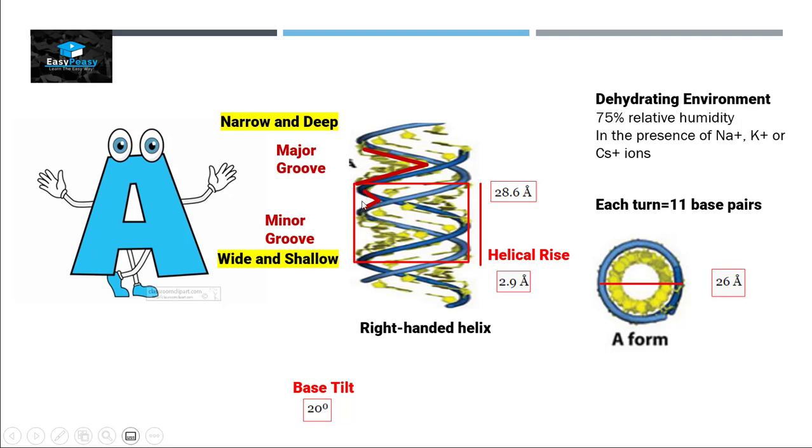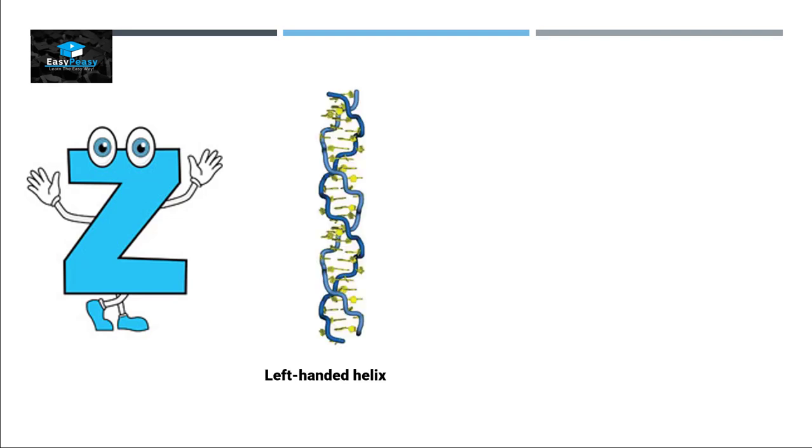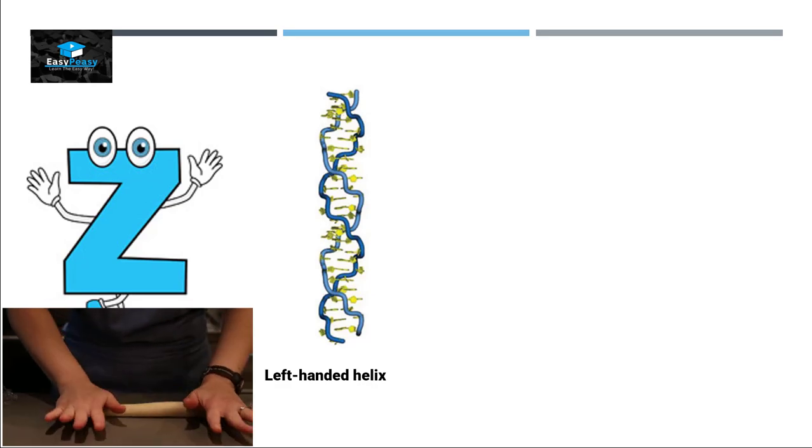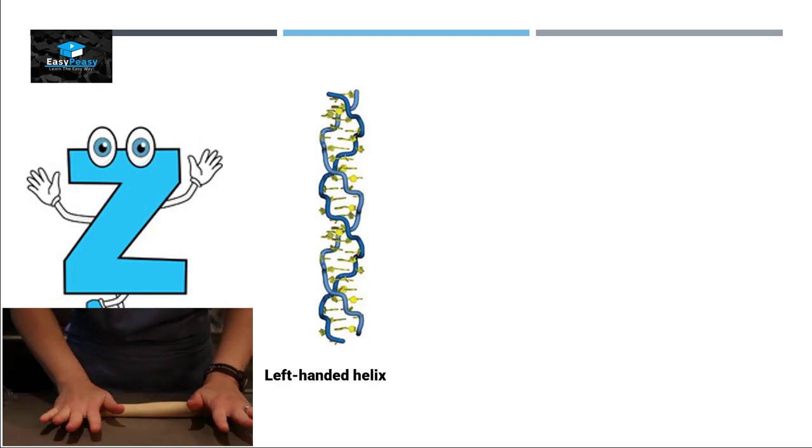Last but not least, the Z form. Z form is a left-handed helix. Just like if we had the B form and we are rolling it, then the length of this form will become longer and the diameter will become shorter. So that's the difference between B form and Z form.